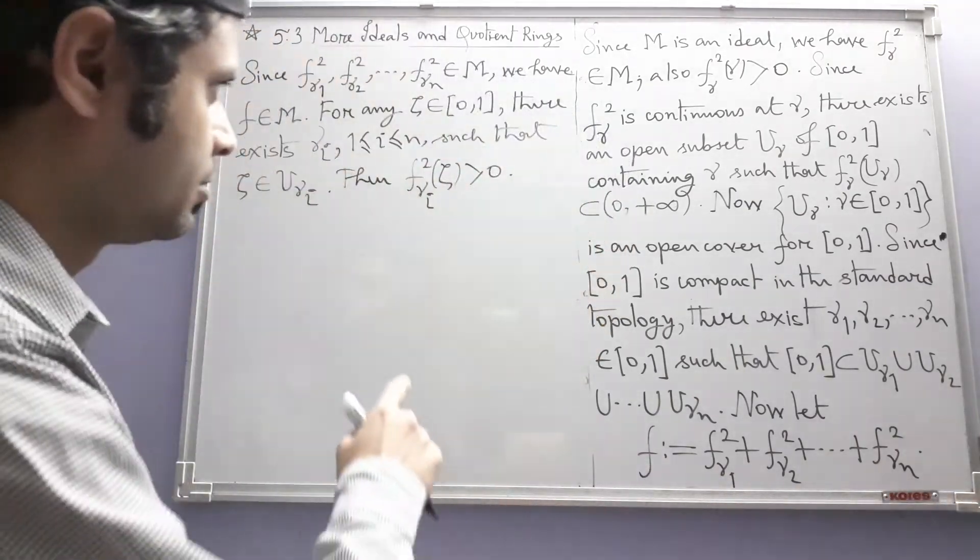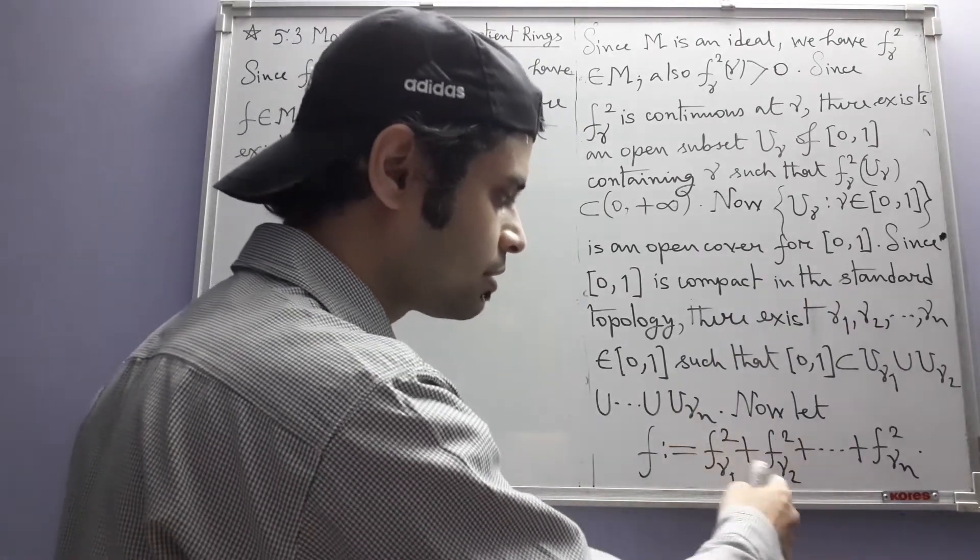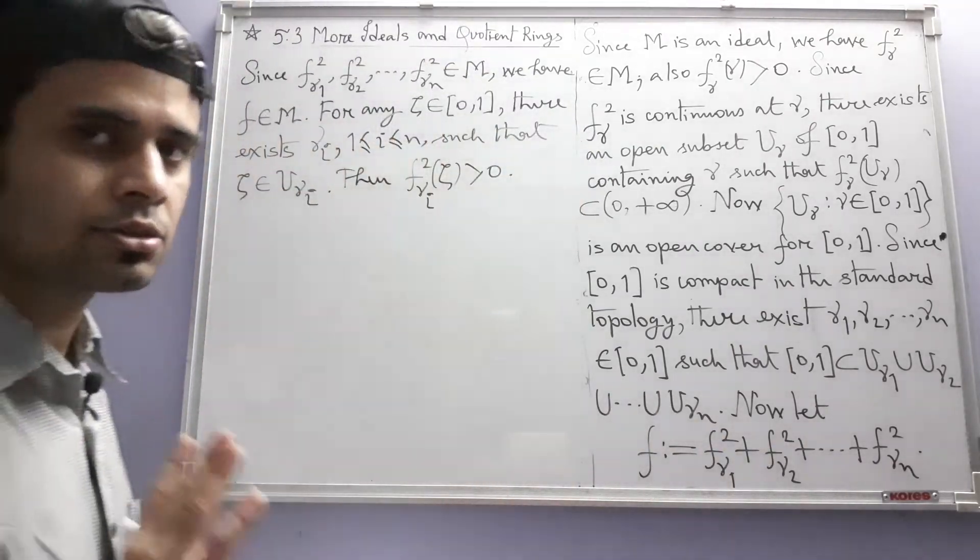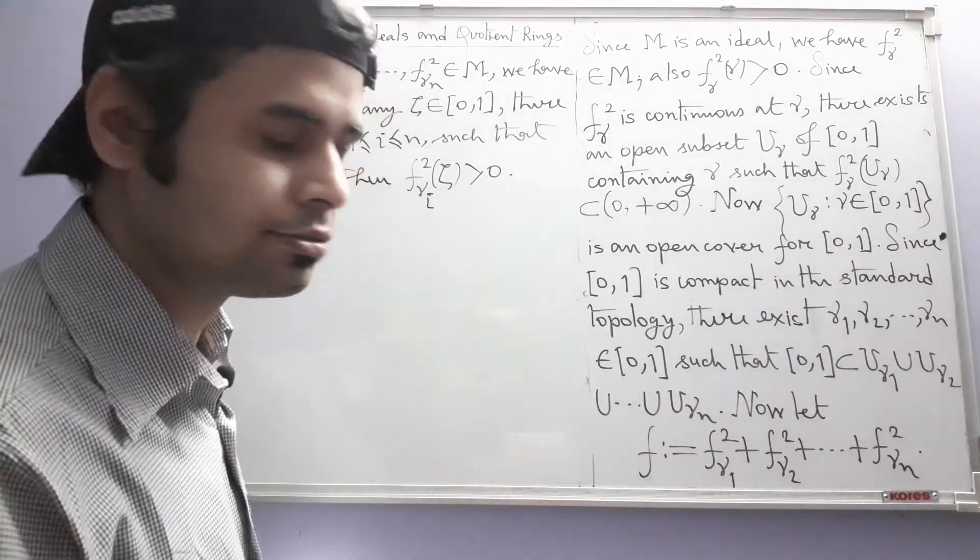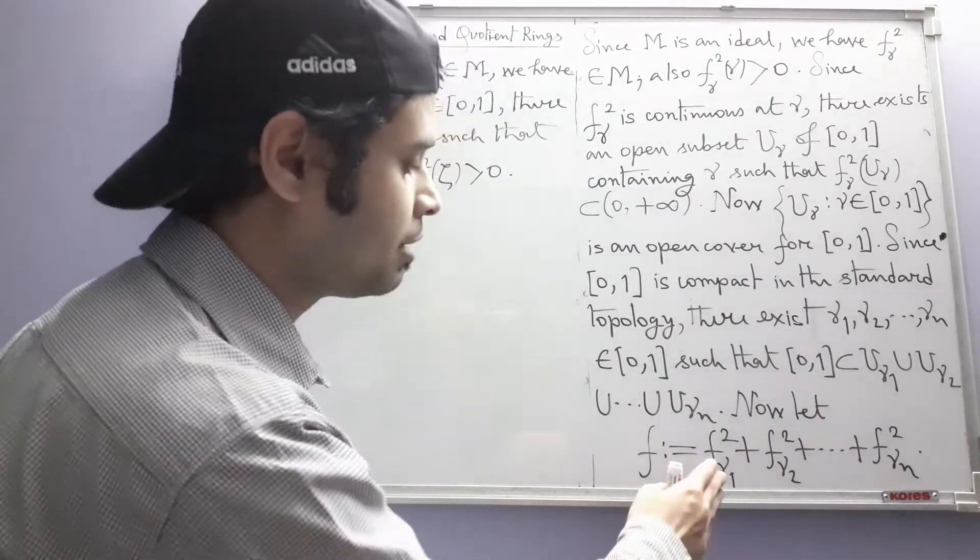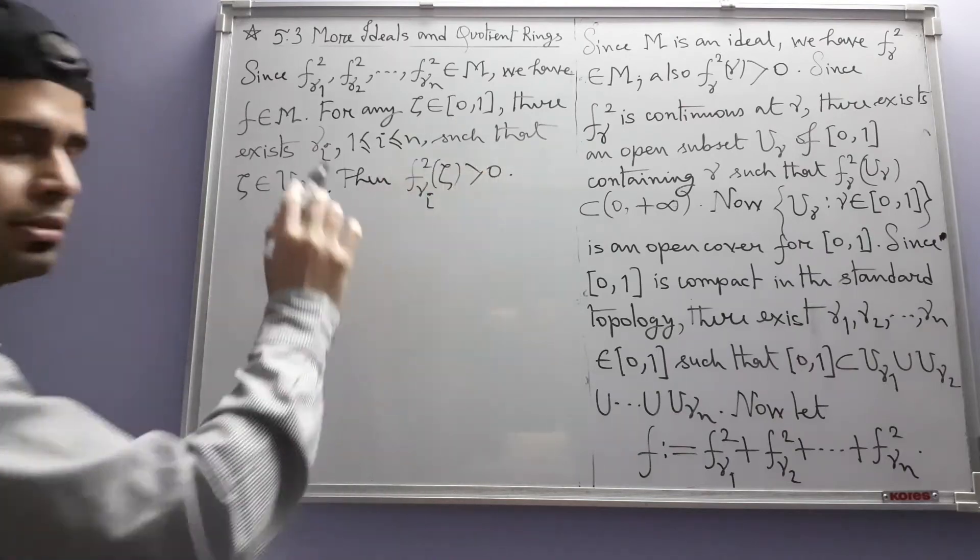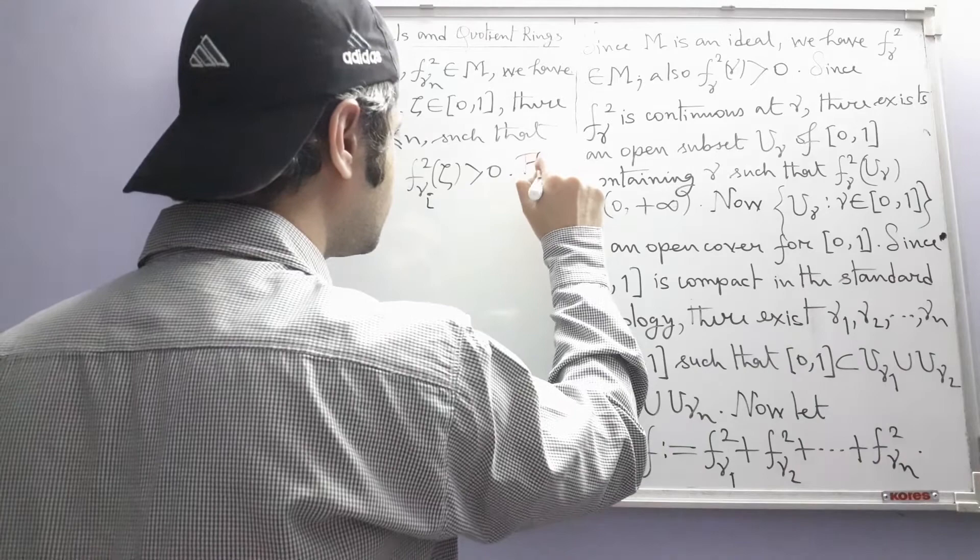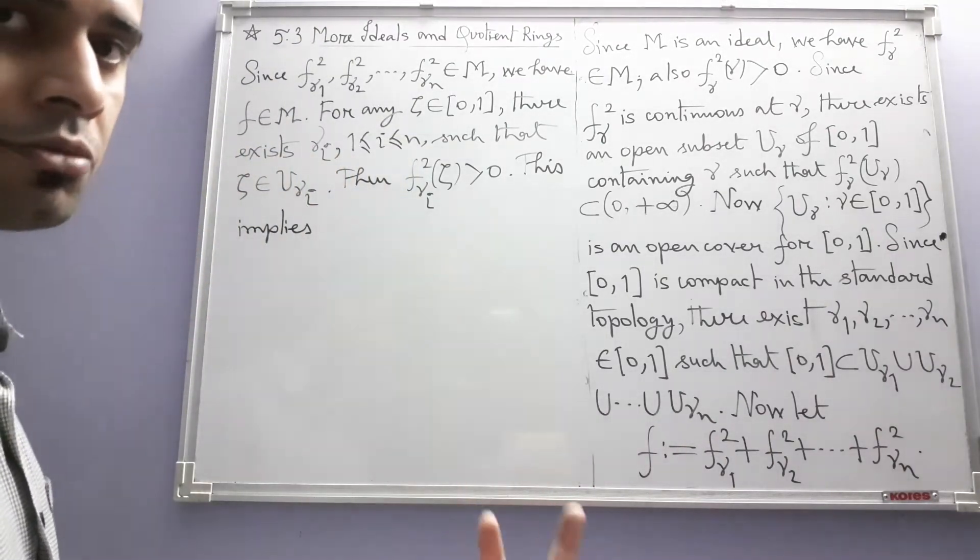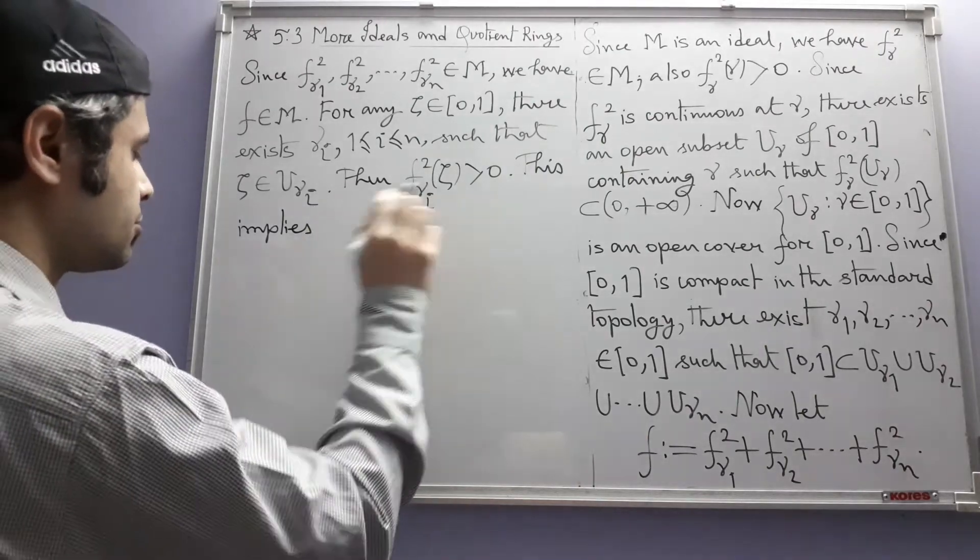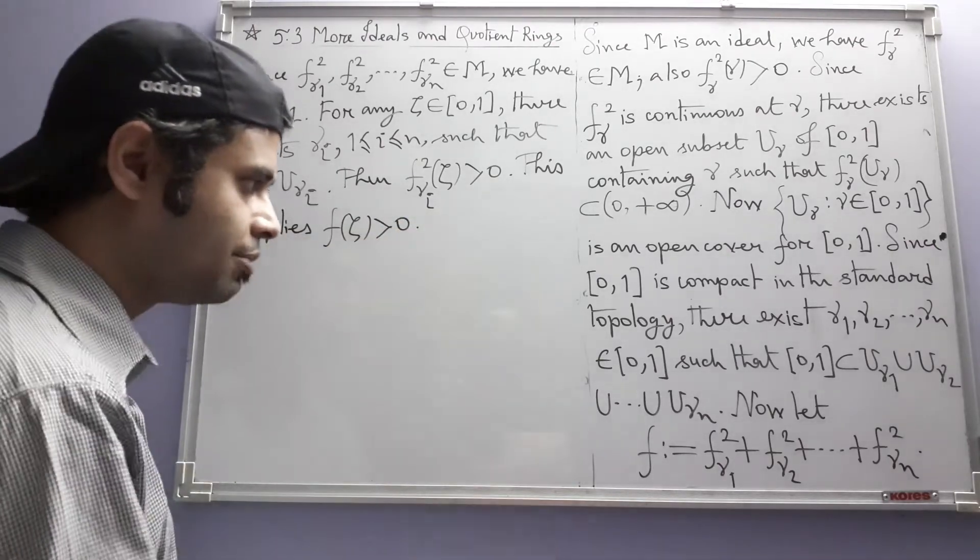Now look at this function. It does not matter what happens to the other values, I mean what the other functions do to zeta. We have one positive value. The others, whatever they are, they cannot be negative. At most they can be zero, some of them. But f ultimately has to be positive at zeta because of this. This implies, because all are squares, there is no question of things getting cancelled, that will not happen. So this implies f of zeta is greater than zero. That means f never vanishes.